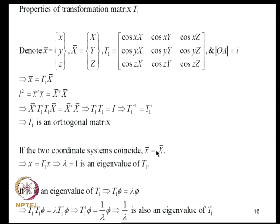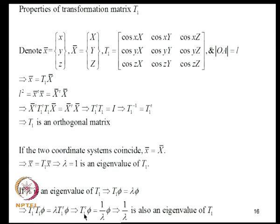If the two coordinate systems coincide then lambda=1 is an eigenvalue of T1. If lambda is an eigenvalue of T1 with eigenvector phi, pre-multiplying the eigenvalue equation by T1-transpose and using the orthogonality property T1-transpose·T1 = I gives T1-transpose·phi = (1/lambda)·phi, meaning 1/lambda is also an eigenvalue of T1. Therefore eigenvalues of T1 appear as reciprocals.